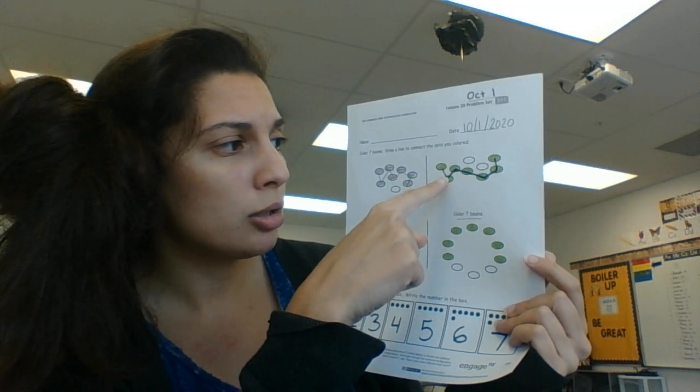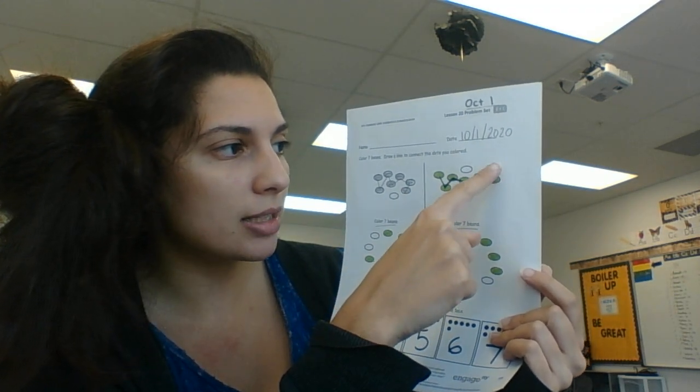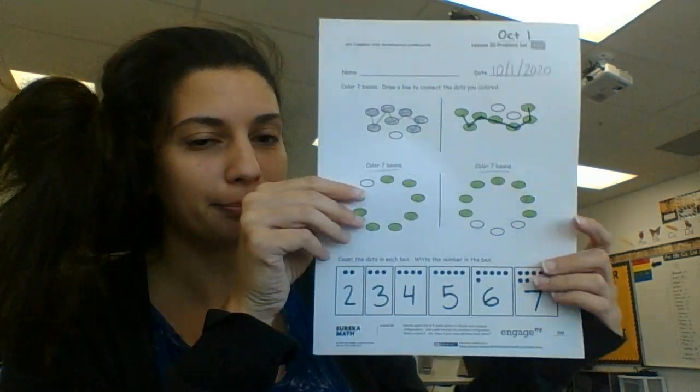So I counted one, two, three, four, five, six, seven. That's how I counted them. When you come down here,